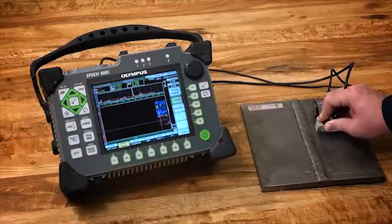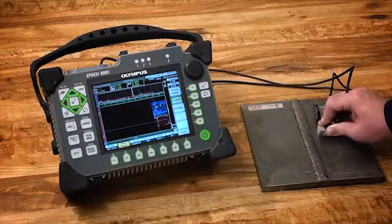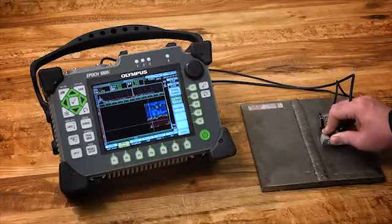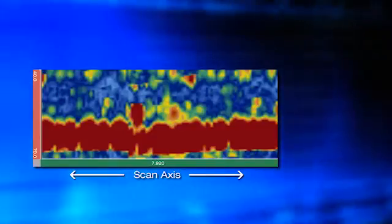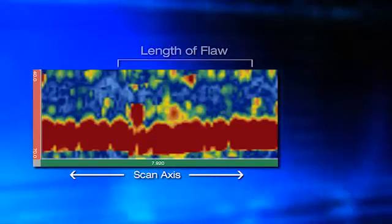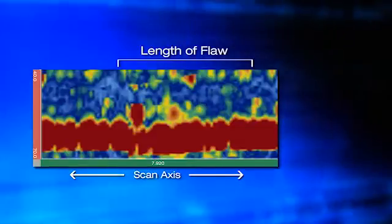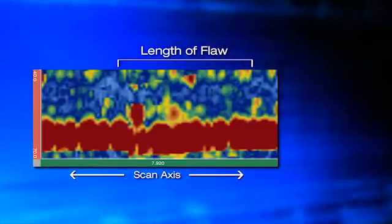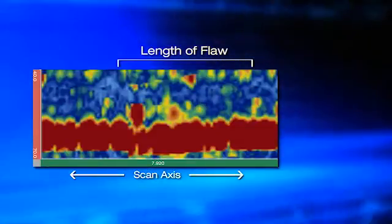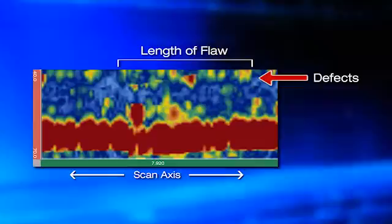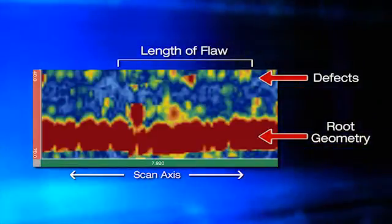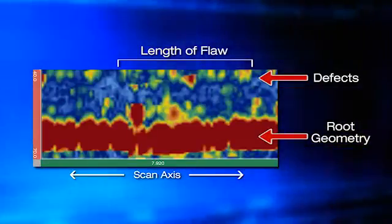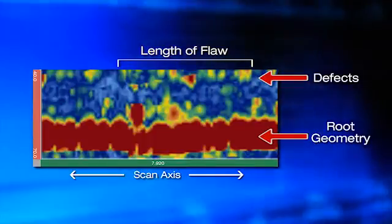This encoded C-SCAN capability adds an additional dimension to standard sector scans. The C-SCAN image allows you to determine the length of the flaw along the weld. It can also aid in differentiating between defects and geometrically induced reflections, such as those that often occur from the root of the weld.